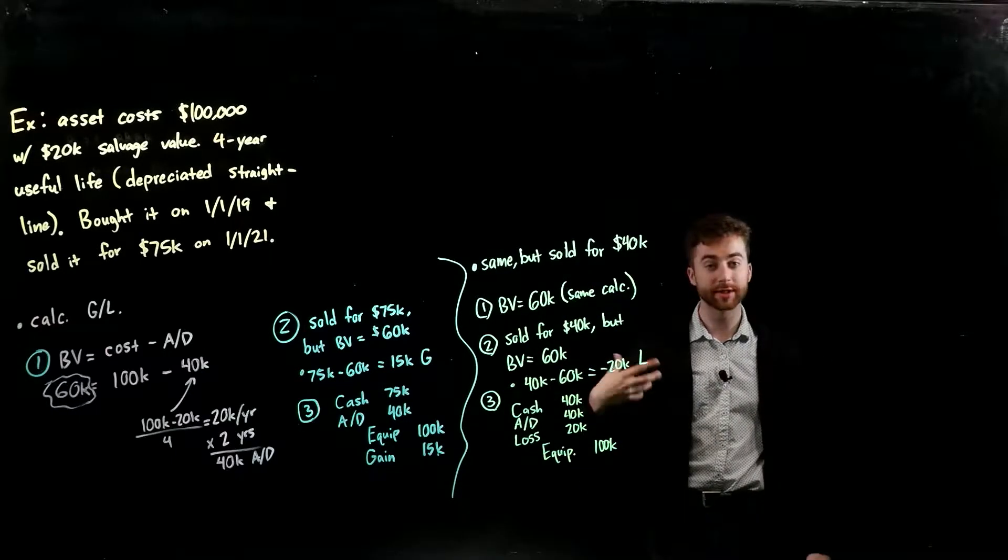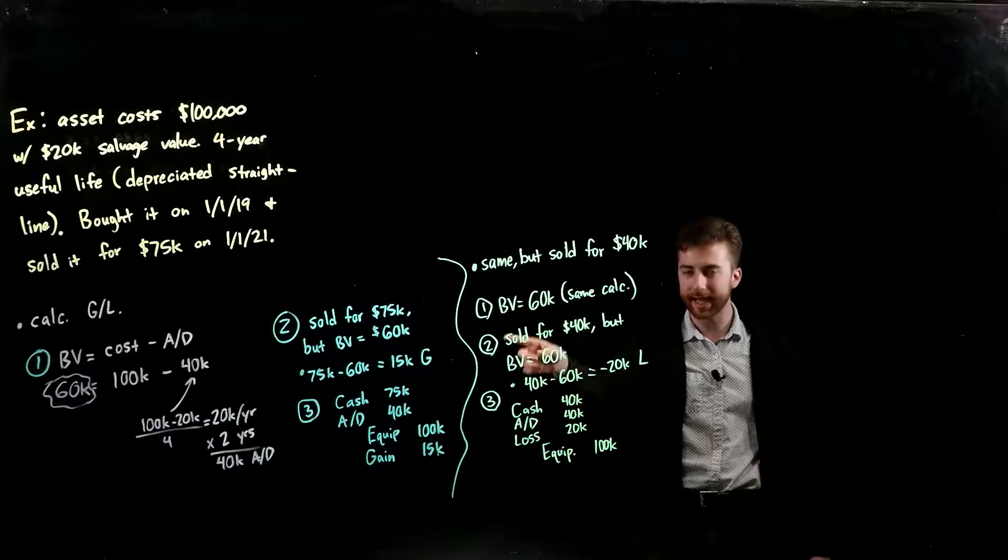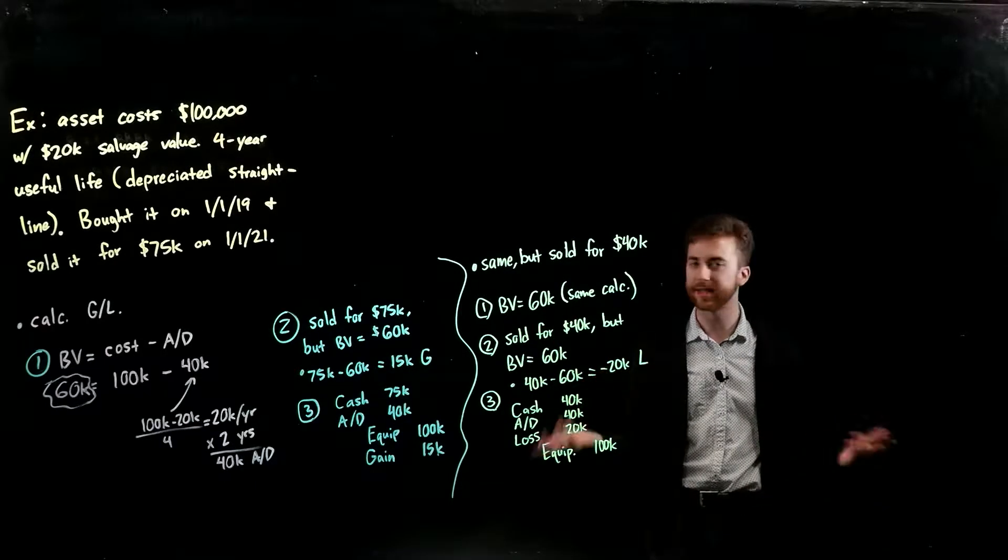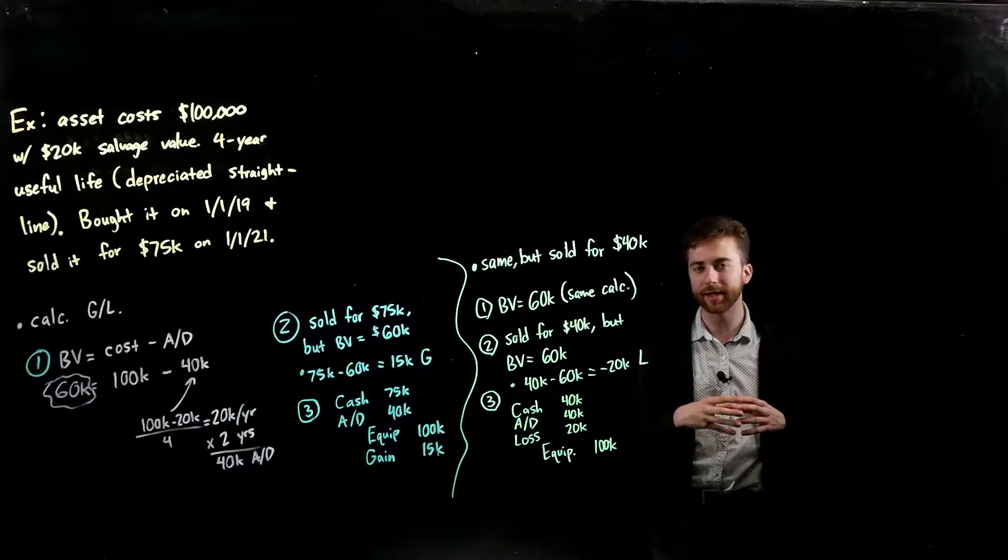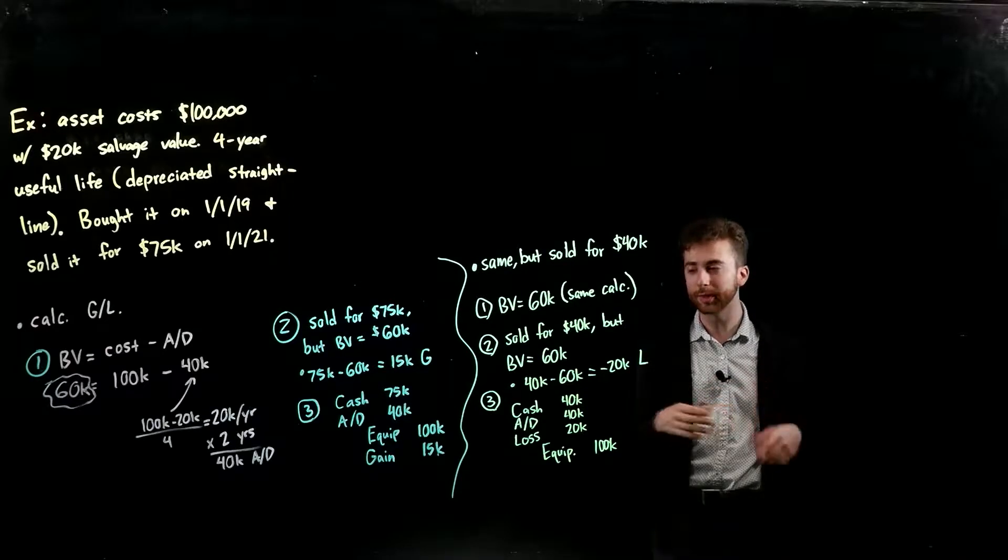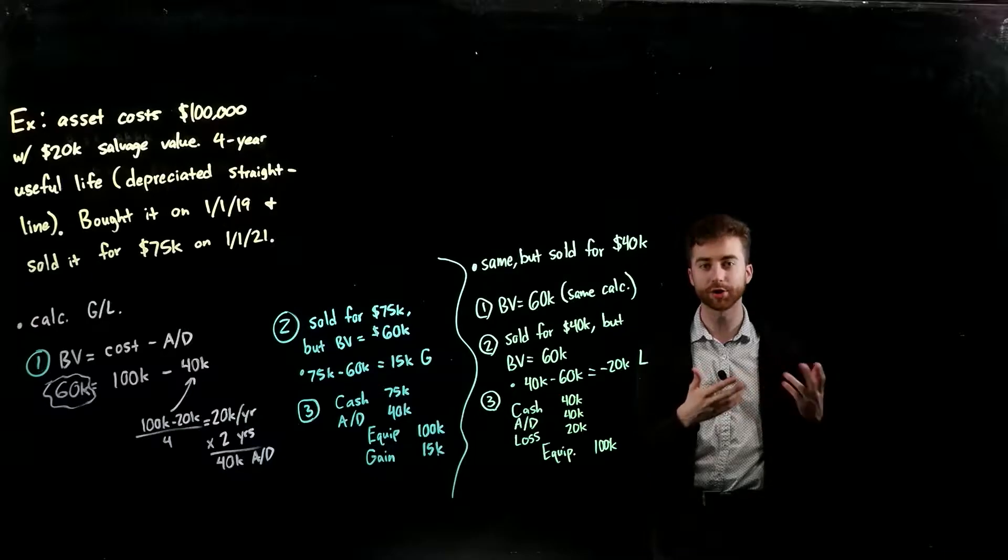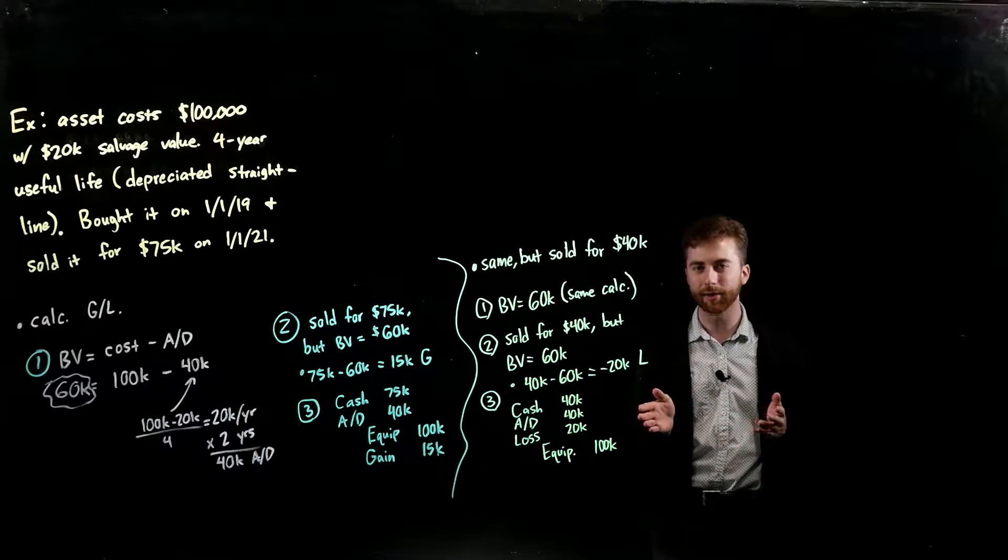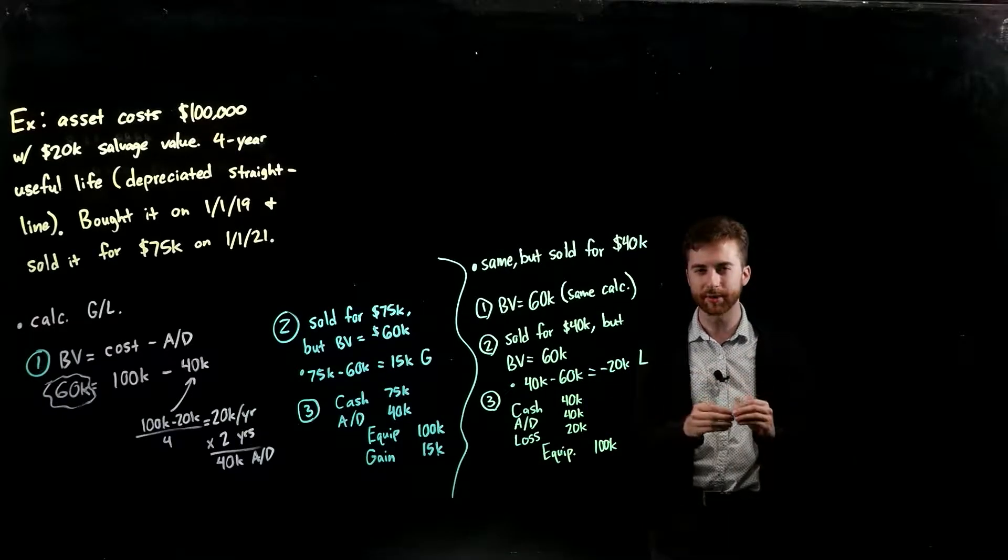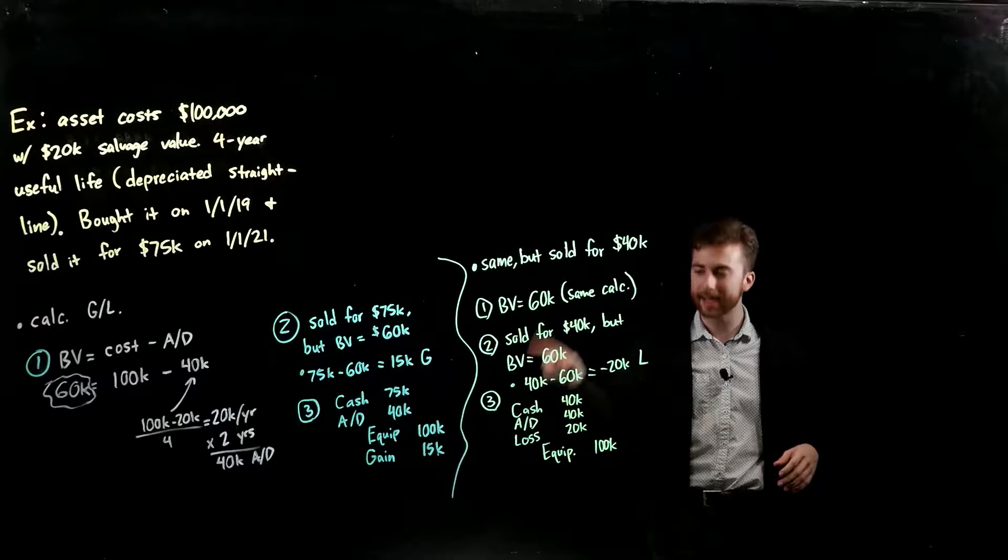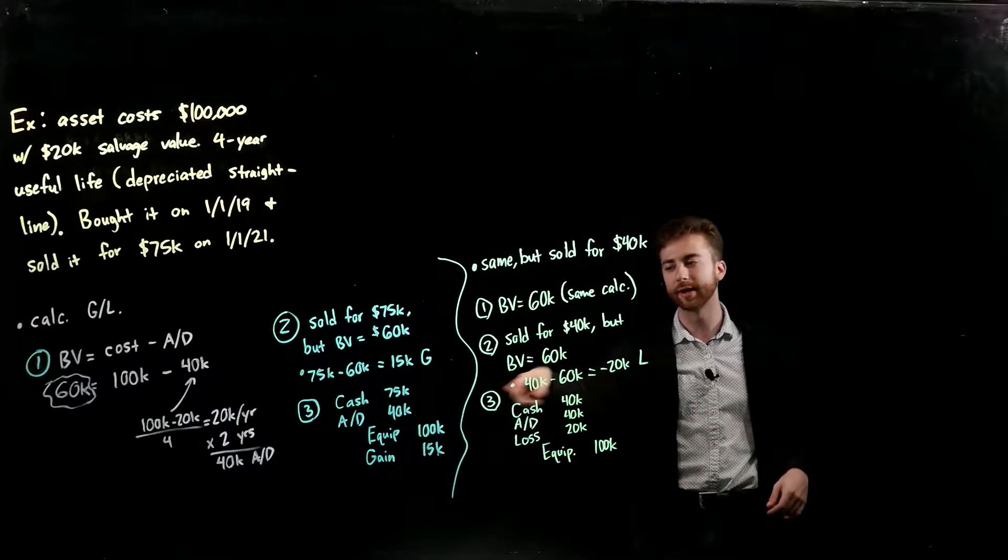The third step is just to do the journal entry for it. I sold the asset for $75,000, so I debit or increase cash by $75,000. Now the accumulated depreciation, I'm keeping that running tally of the depreciation I've accumulated on this asset and that holds naturally a credit balance - it's a contra account. But once I'm getting rid of that account, because I don't have the asset anymore, I don't want to keep the depreciation associated with the asset on my books still. So I debit my accumulated depreciation of $40,000 because that's what we calculated for the depreciation on that asset up to that point.